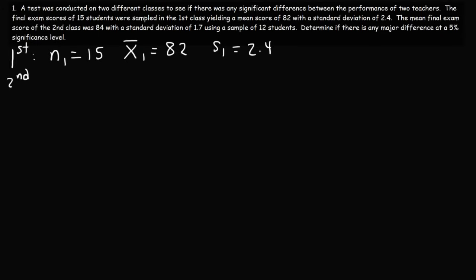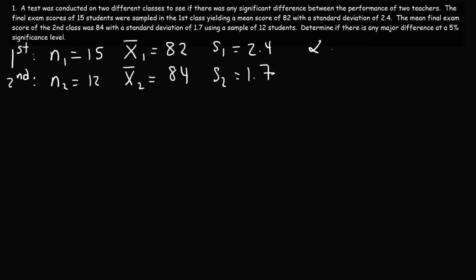For the second class, the sample size n2 is 12. The sample mean for the second class is 84, and the sample standard deviation s2 is 1.7. We want to determine if there is any major difference at a 5% significance level. So our alpha value is 0.05, which means our confidence level is 0.95 or 95%.